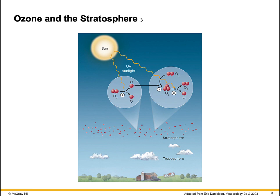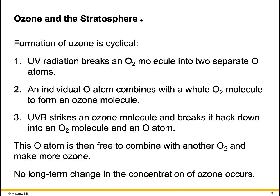Here, ultraviolet radiation causes oxygen molecules to break into two atoms. An individual atom combines with an oxygen molecule to form an ozone molecule. Then, UV radiation breaks the ozone molecule back down to an oxygen molecule and an oxygen atom. The formation of ozone is cyclical.